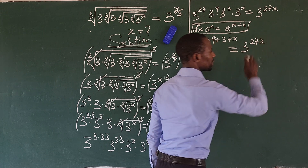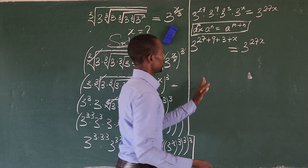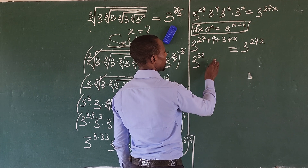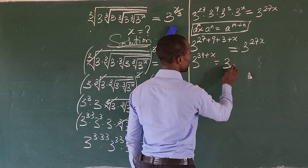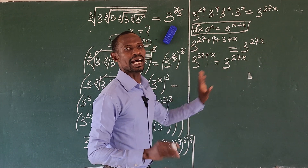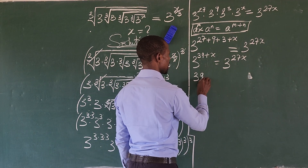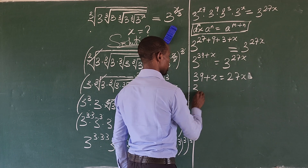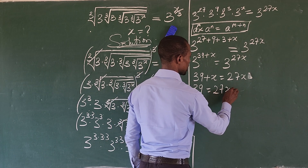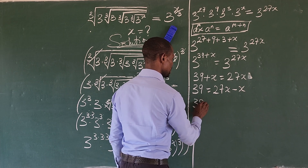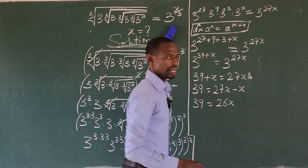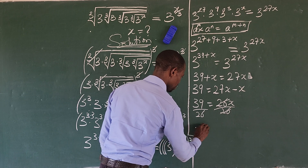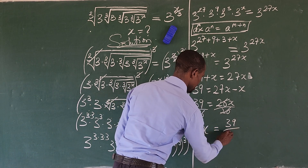This gives us 3 to the power of 27 plus 9 plus 3 plus x, equal to 3 to the power of 27x. Adding up: 27 + 9 + 3 = 39, so we have 3 to the power of 39 plus x, equal to 3 to the power of 27x. Since the bases are the same, we equate the exponents: 39 + x = 27x. Moving x to the right: 39 = 26x, so dividing by 26, x equals 39 over 26.